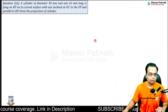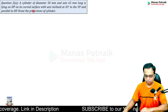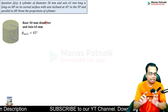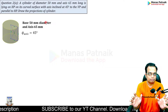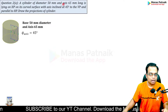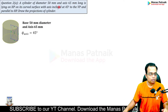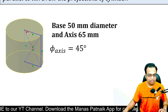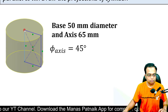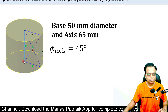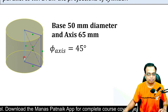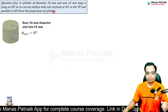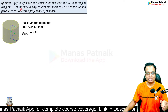Let's write down the data provided in the question. The dimensions: base diameter is 50 mm, radius is 25 mm, and the length of the axis is 65 mm. The distance between the two centers is the axis length, that's 65 mm.